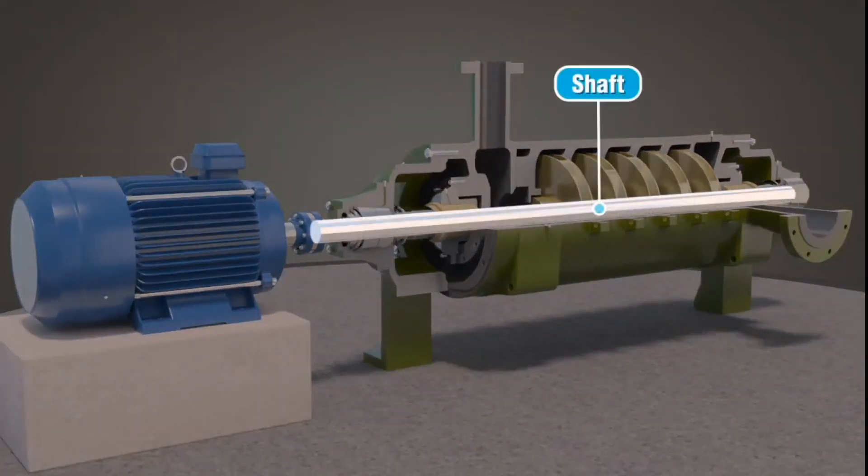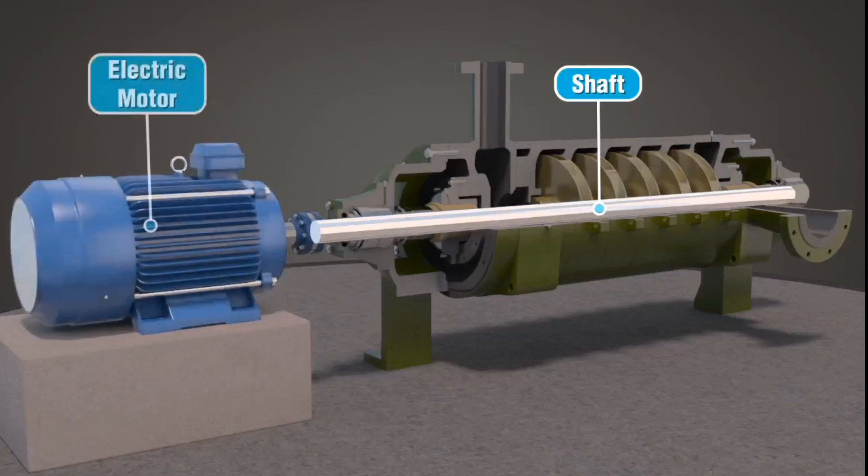The shaft extends the full length of the casing with a driver, typically an electric motor, connected to the inboard end.